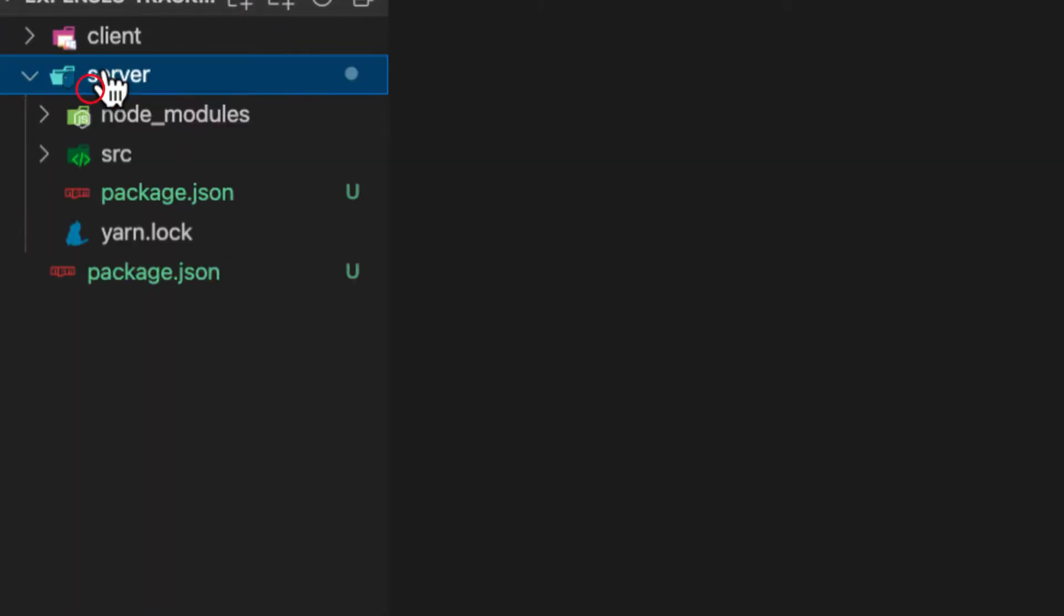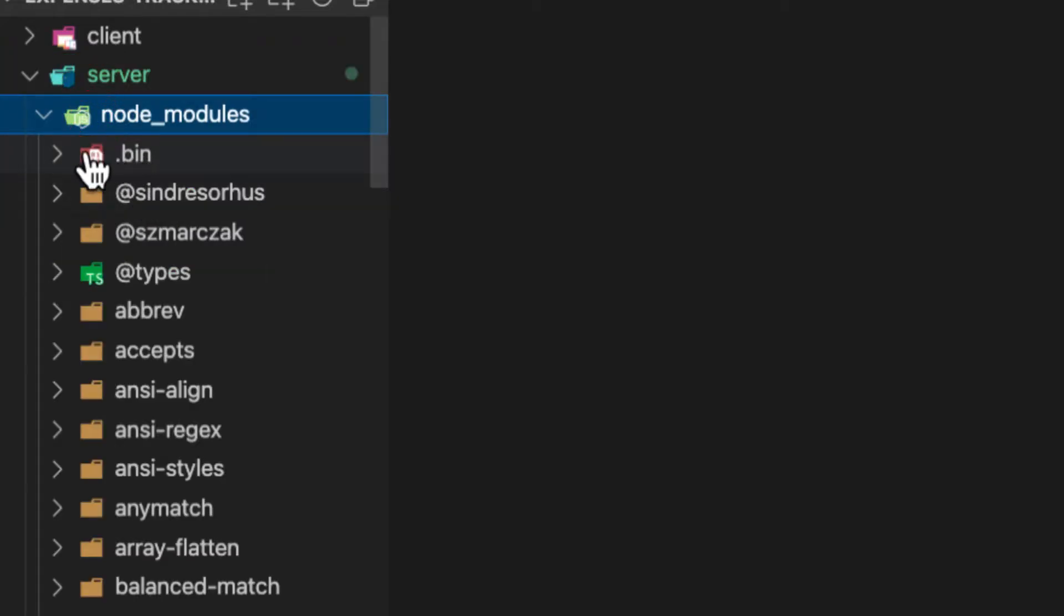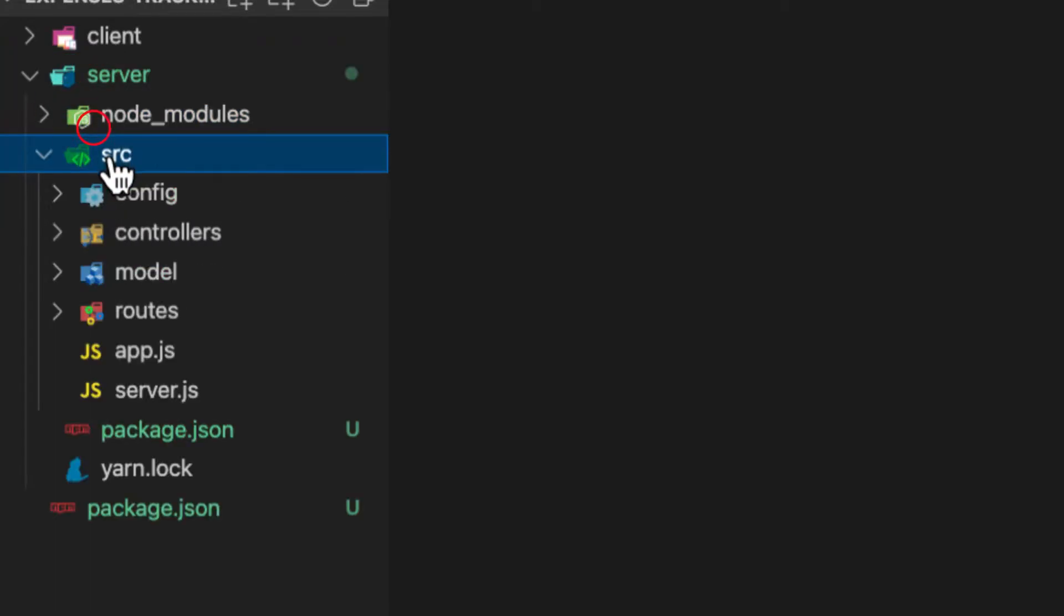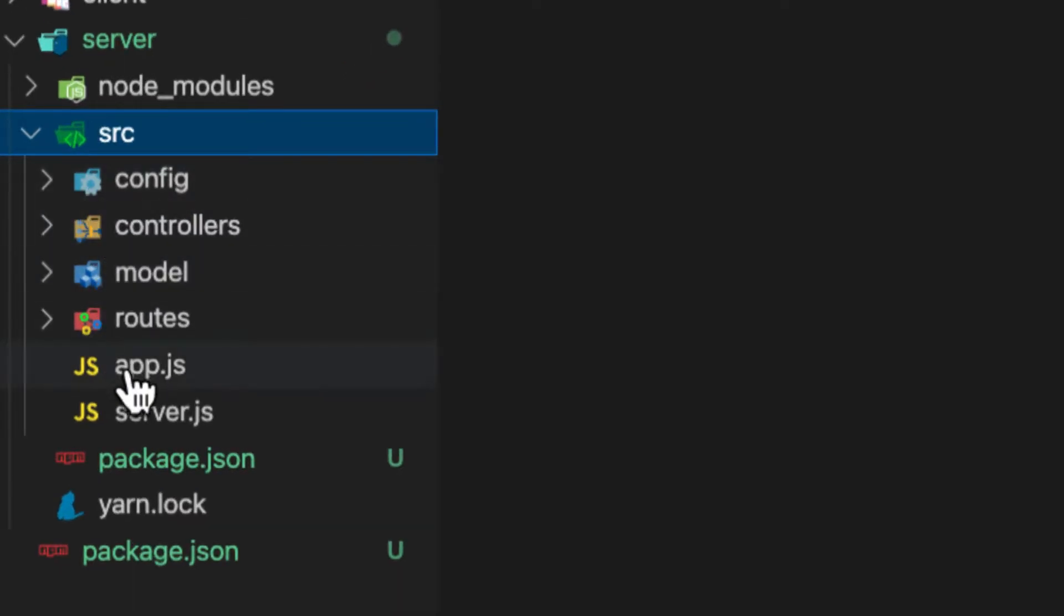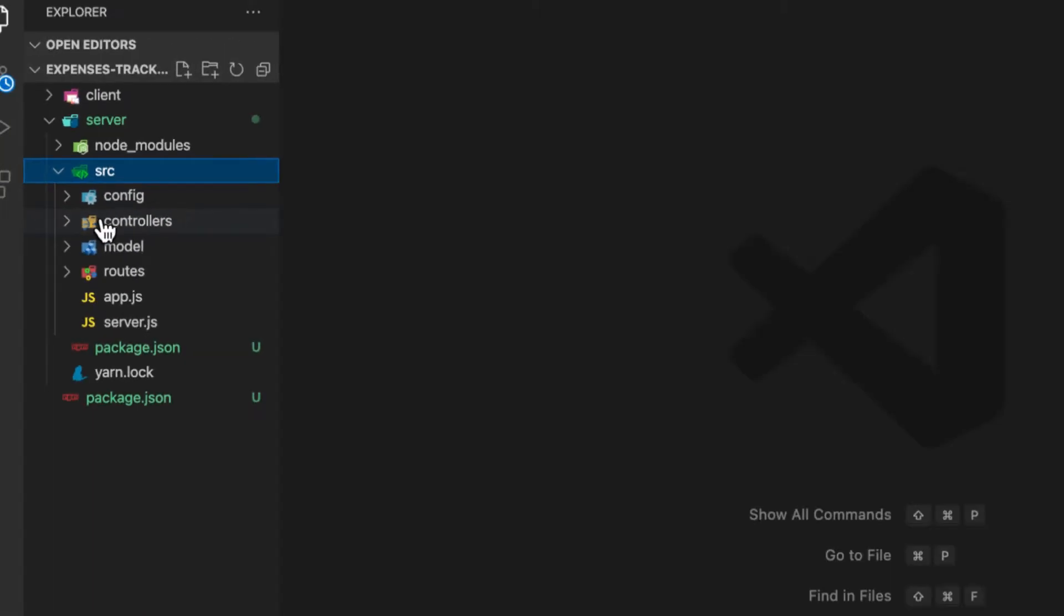Here, as you can see, inside the server we have these folders—we have controllers, model, and route. These folders tell you that you're using MVC. But before that, let's learn what MVC is all about.